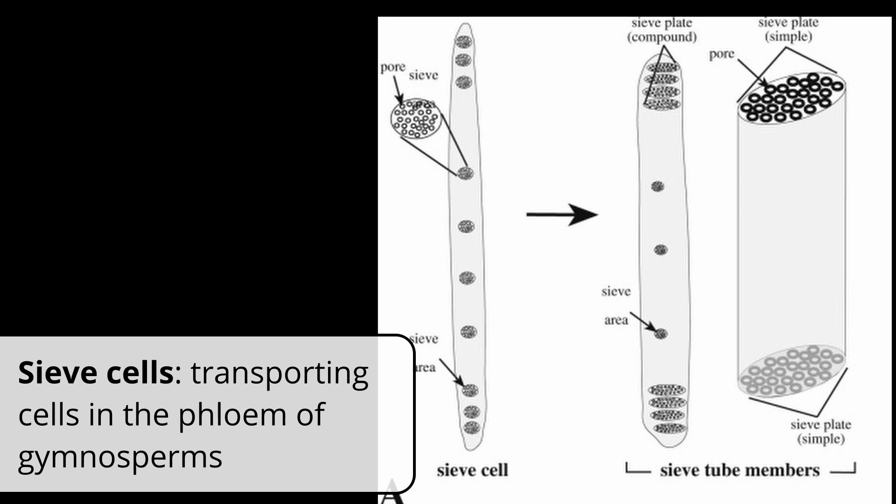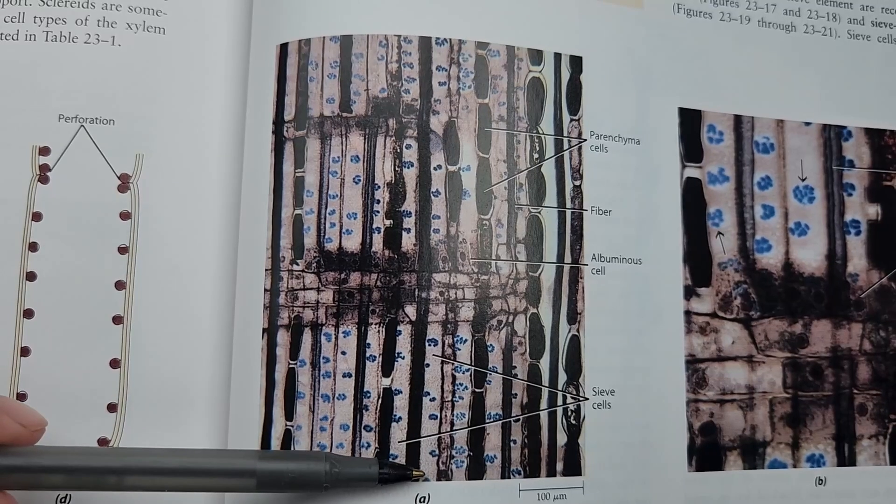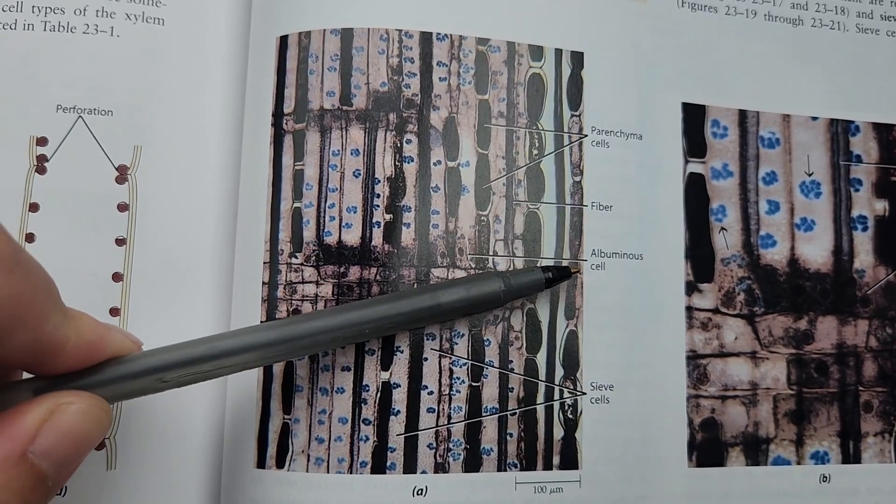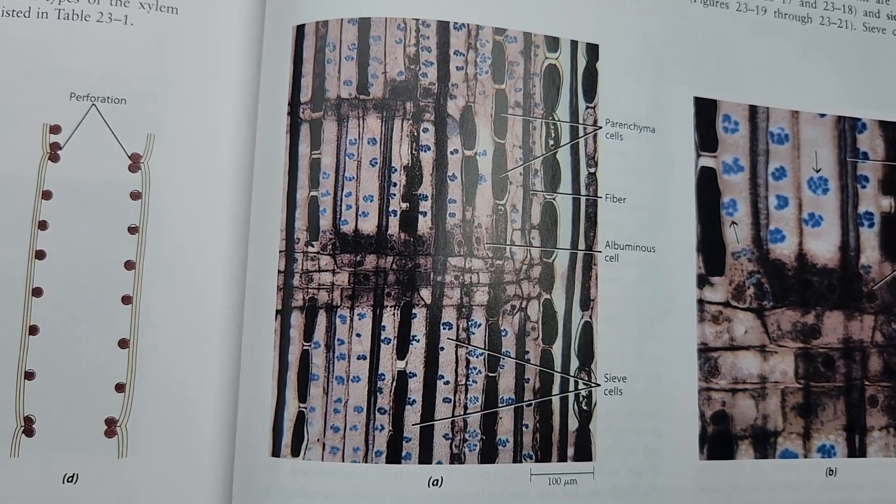So in gymnosperms, the cells are called sieve cells. They're longer, thinner, and do not have that sieve plate. So not only do they not have as much room for transport, they don't have those larger openings, so it's not as efficient. They also have a cell that's assisting them. It's not called a companion cell, but it's the same idea.